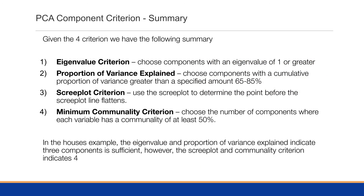Summarizing the four criteria: the eigenvalue criterion selects components with an eigenvalue of one or greater; proportion of variance explained selects components with cumulative proportion between 65 and 85 percent; the scree plot criterion uses the plot to find the point before the line flattens; and the minimum communality criterion chooses the number of components where each variable has a communality of at least 50 percent. For the housing example, eigenvalue and proportion of variance indicate three components, while scree plot and communality indicate four.